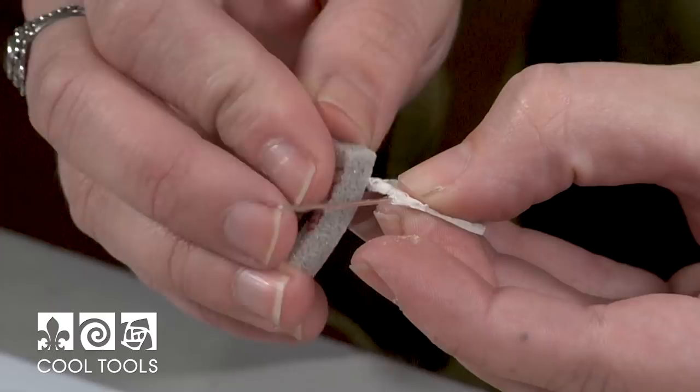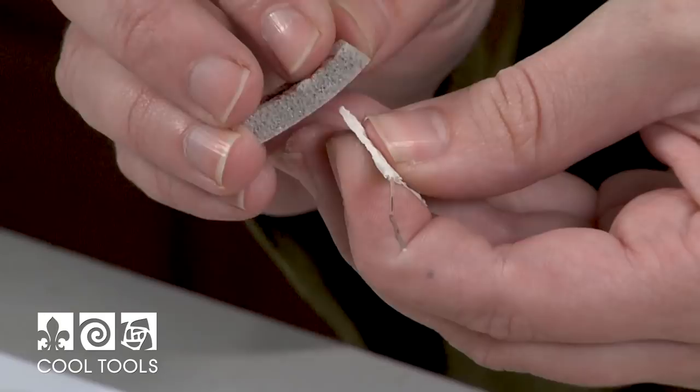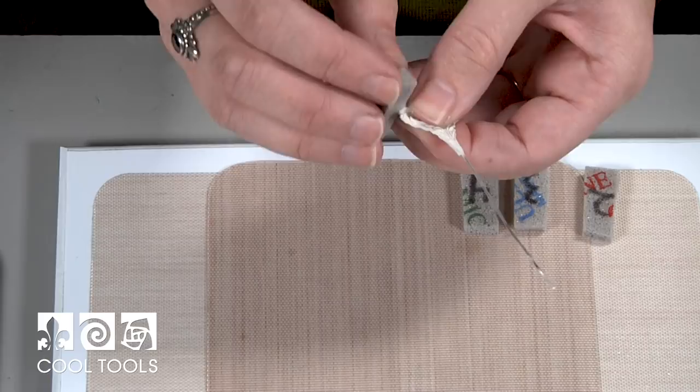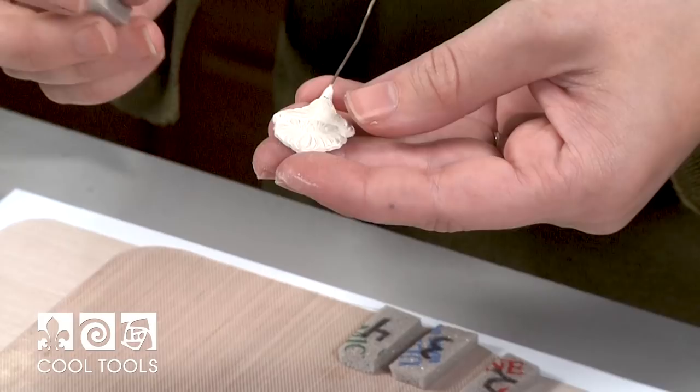And then once you have the shape established, we'll move on to the other sanding pads to clean it up and give everything a nice shine. So I'm going to keep working my way around the shape with the fine. And then we'll touch base again when I'm working my way down to the super fine.